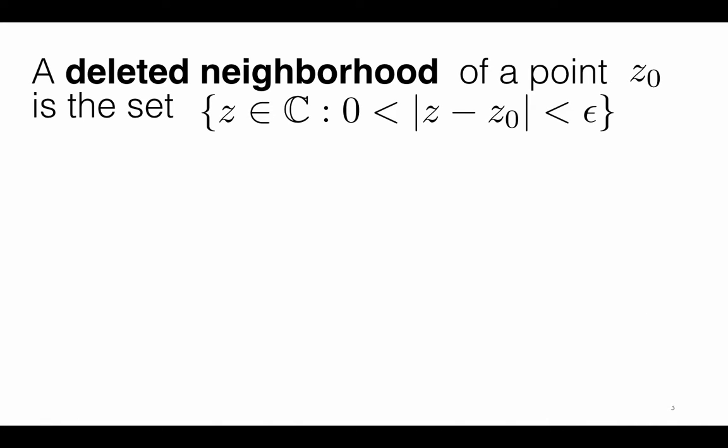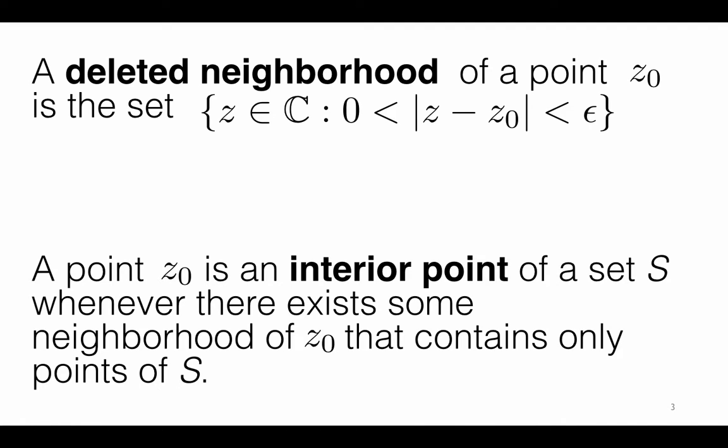A deleted neighborhood of a point z0 would be the set of all points in an epsilon neighborhood of z0 except for the point z0 itself. In set notation, we have the absolute value of z minus z0 is greater than zero and less than epsilon. Given a set S, a point z0 is called an interior point of S whenever we can find an epsilon neighborhood of z0 that contains only points of S — that is, you can put a small open ball around z0 that is contained in S completely.